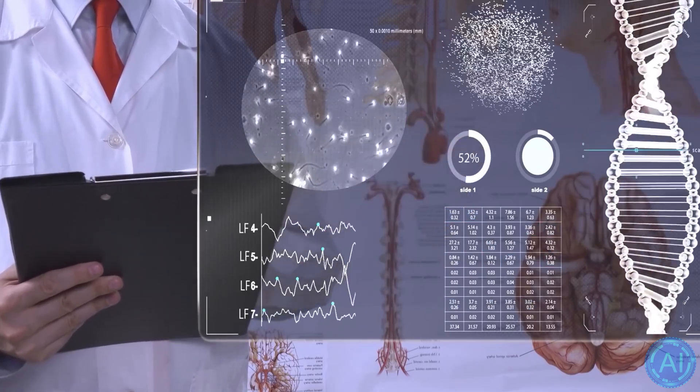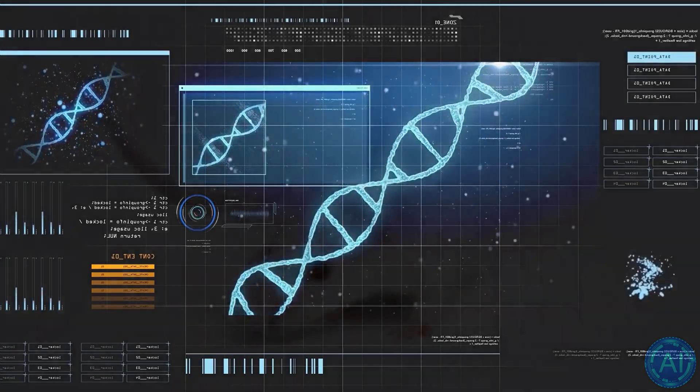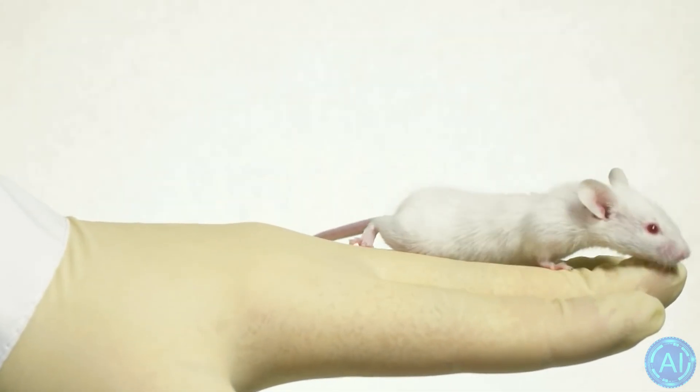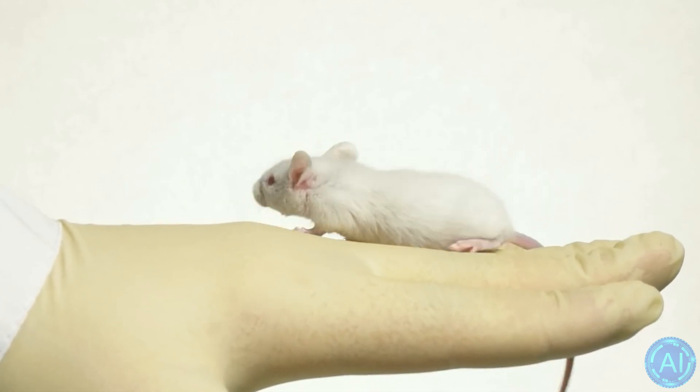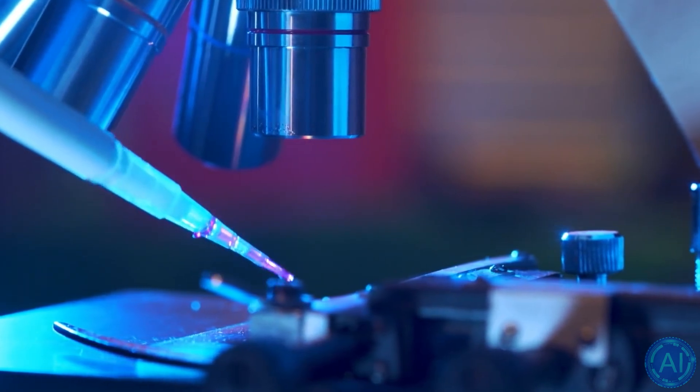RoseTTAFold was also able to address the protein assembly problem, in that it could predict the structure of proteins made up of many units based just on the amino acid sequence. They were able to anticipate how the shape of an immunological molecule latches onto its target.